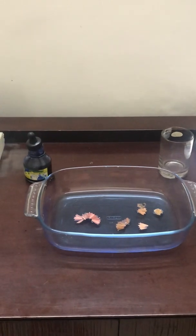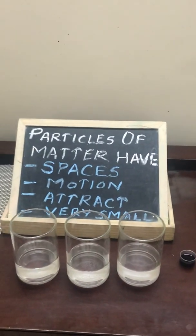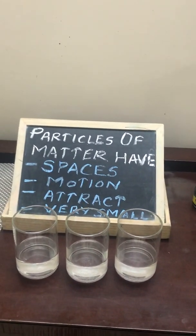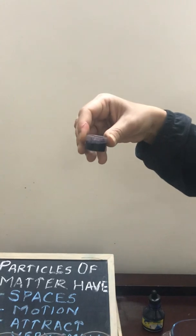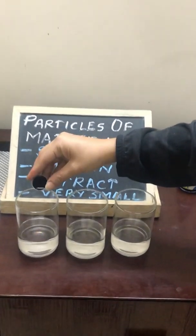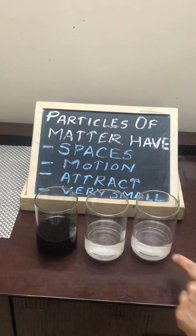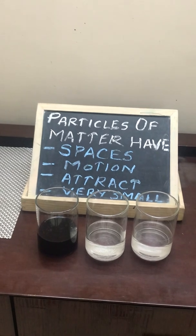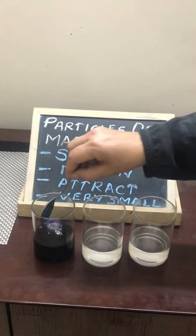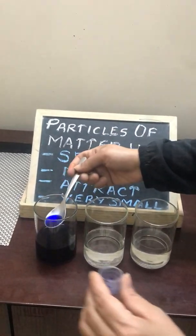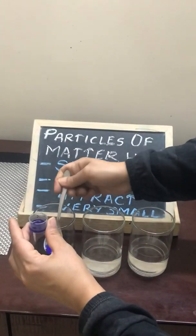Let's do one more experiment. I will add a pre-measured 5 ml of ink — using a bottle cap that comes with medicines — into the first glass. Note that all three glasses have 100 ml of water each. I add the 5 ml of ink, shake it well, and then take out 5 ml from this first jar.